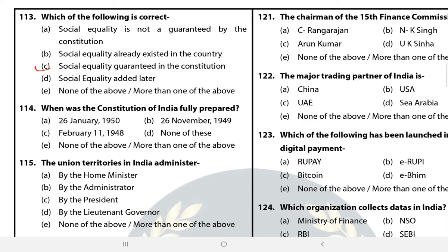Question 114: When was the Constitution of India fully prepared? B — 26 November 1949. Question 115: The Union Territories in India are administered by? The answer is C — the President. It is mentioned under Article 239-1.